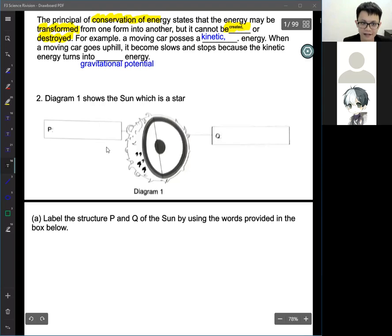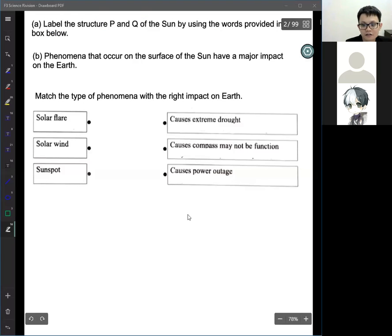For this question, for P and Q, label it. Basically, this question, you just need to memorize. For this one, it's solar flare. For this, it's chromosphere. You just need to memorize. There is no shortcut to do this question. Sometimes, in science, you just need to memorize.